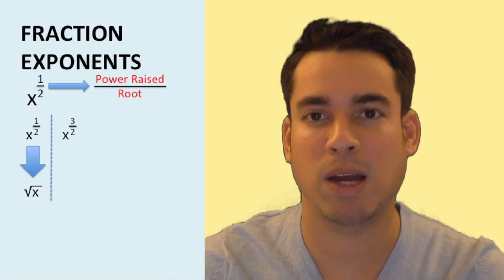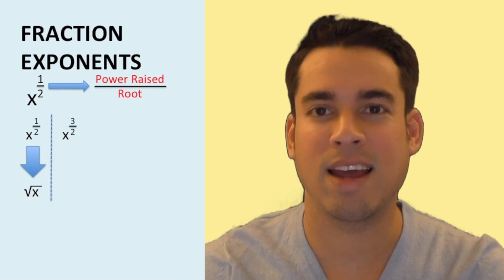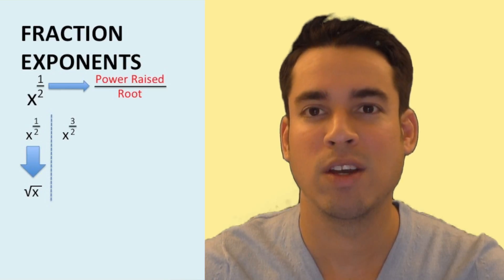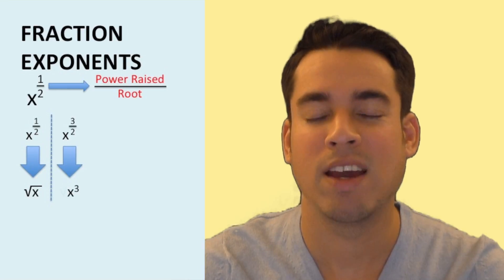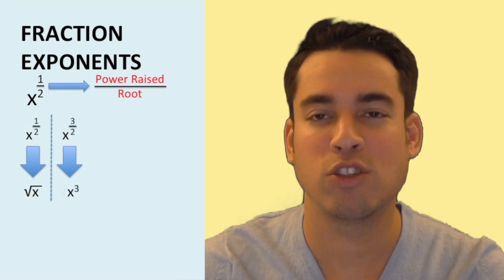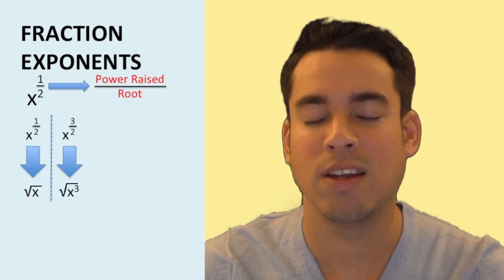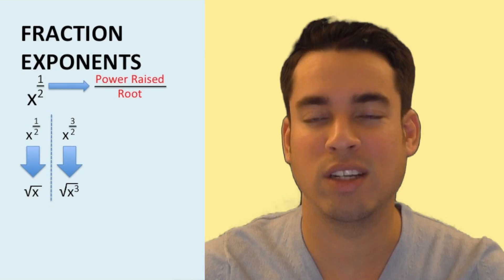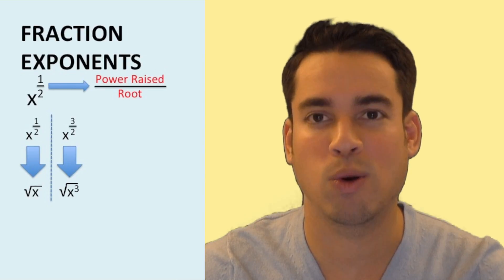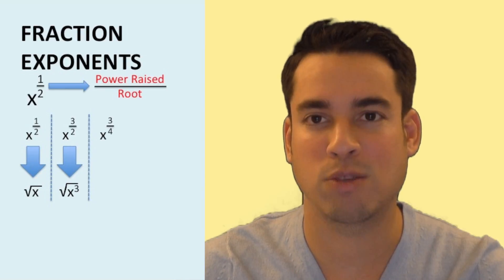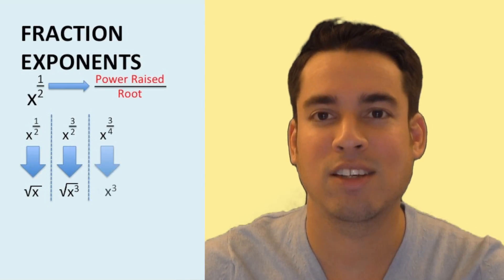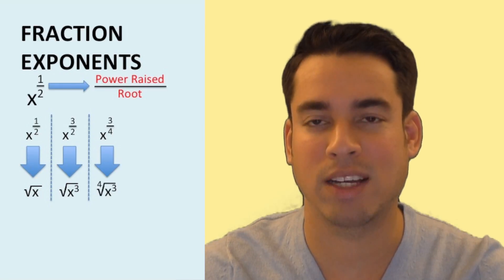For a more complex example, x to the three halves: the numerator three means we have x cubed, and the denominator two means we take the square root. So it's the square root of x cubed — and the order doesn't matter; you can take the root first or cube first. One more: x to the three fourths is the fourth root of x cubed. Now that we've covered the basic rules, let's do some practice problems.